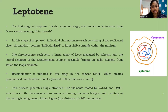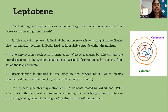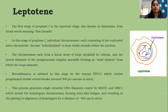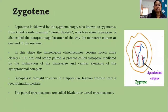Leptotene is the first stage of prophase one, also known as leptonema, meaning 'thin threads' in Greek. Individual chromosomes, each consisting of two replicated sister chromatids, become individualized to form visible strands within the nucleus. The chromosomes form linear areas of loops mediated by cohesin and the lateral elements of the synaptonemal complex, assembling into an axial element from which loops emanate. Recombination is initiated by the enzyme SPO11, which creates programmed double-strand breaks — around 300 per meiosis in mice — generating single-stranded DNA filaments coated by RAD51 and DMC1, which invade homologous chromosomes forming inter-axis bridges and resulting in co-alignment to a distance of 400 nanometers.